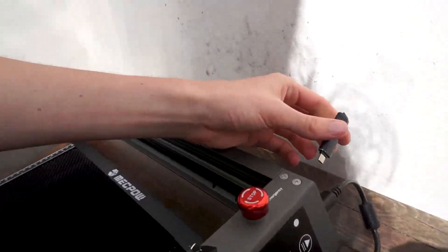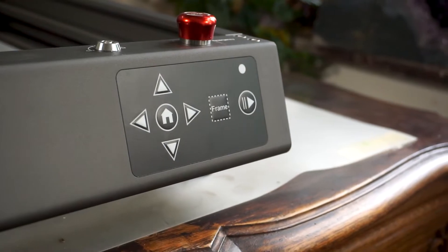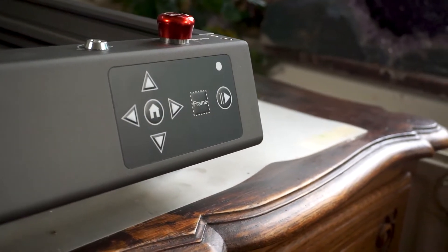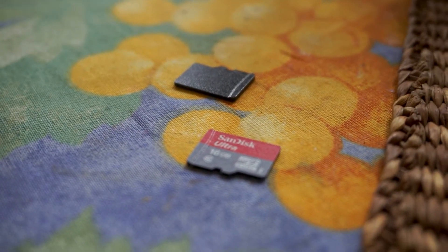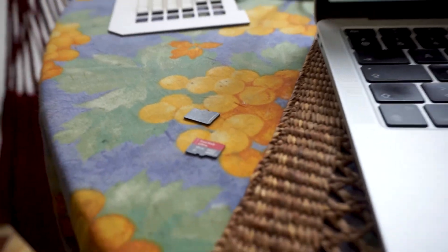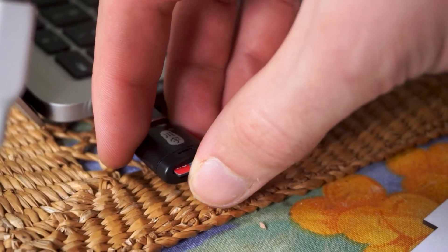And the use of the SD card brings us to another problem, the absence of a screen. Since the machine only reads the first file on the card, it's impossible to prepare several files in advance and run them in a sequence. You have to put one file on the card, cut, put a new file on the card, and so on.